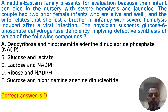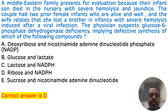Those are the signs and symptoms of G6PD deficiency. Another characteristic feature is that G6PD deficiency attacks are precipitated by various drugs like anti-malarial drugs such as primaquine, sulfa drugs, and consumption of fava beans. Another important point is that G6PD deficiency offers resistance against malaria infection.